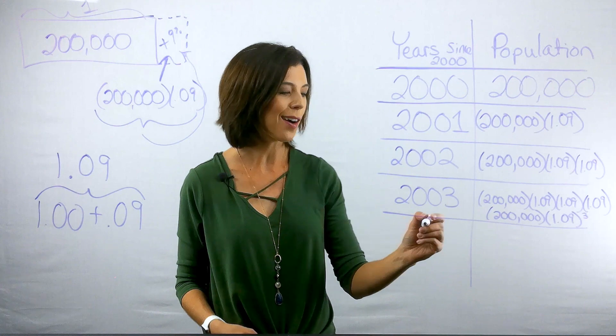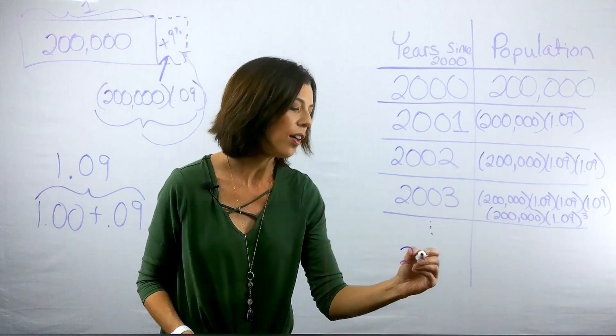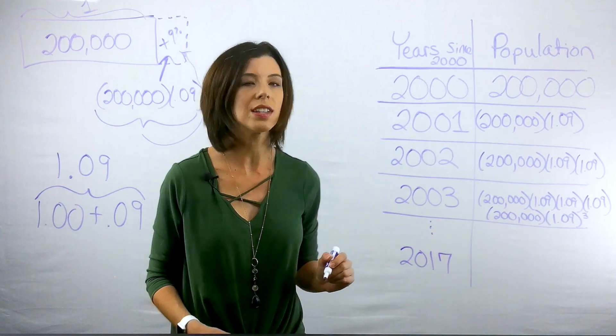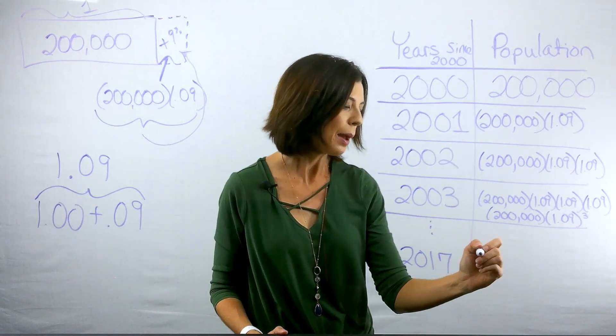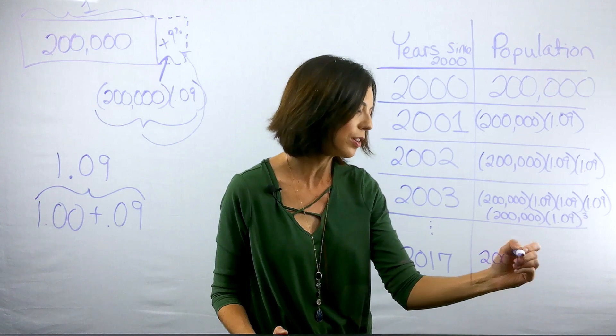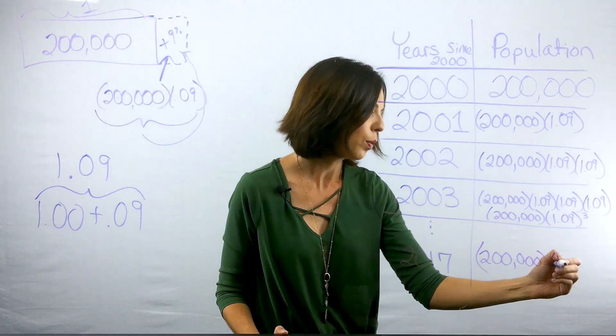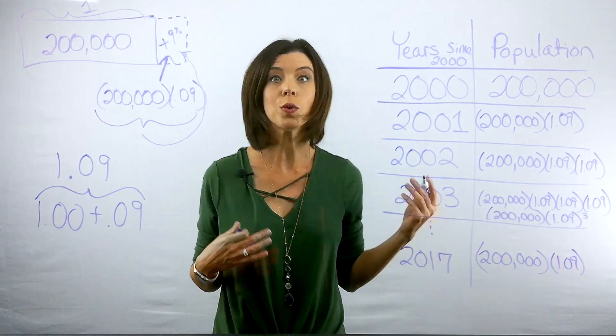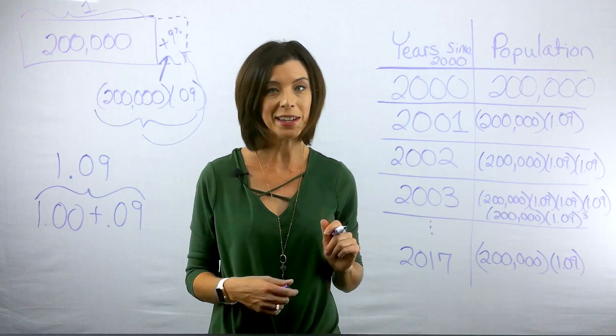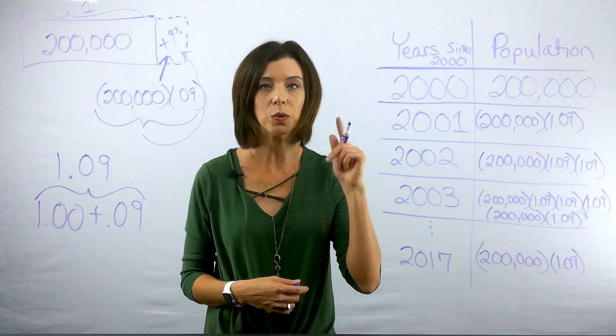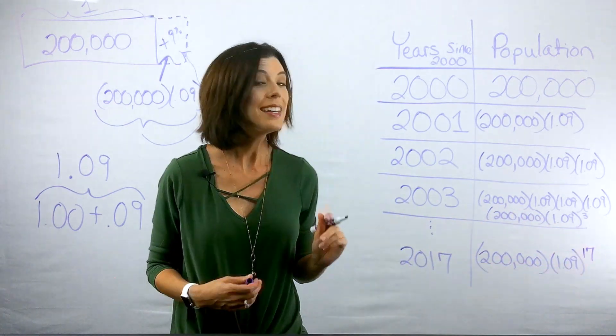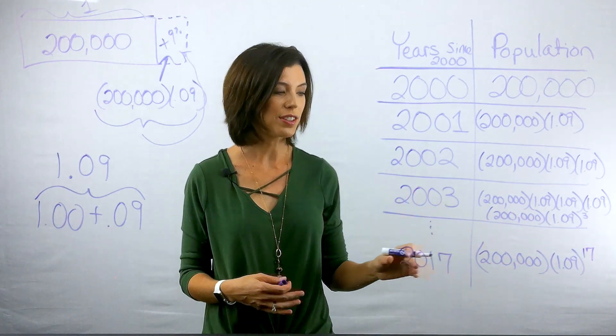Now I can continue down. And I know that I need to get all the way to 2017. Just based on my pattern, I know that for 2017, I'm going to need to multiply 200,000 times 1.09 to what power? Take a minute and think for yourself. If you said 1.09 raised to the 17th power, you would be exactly correct.